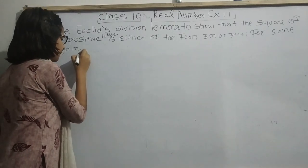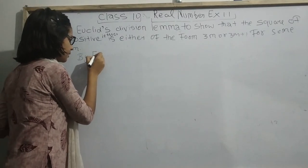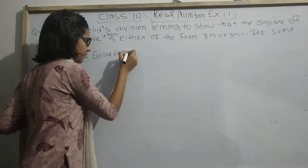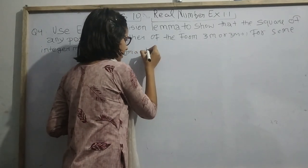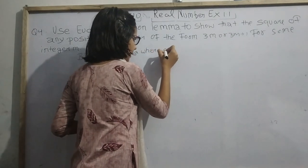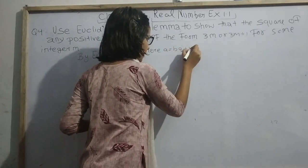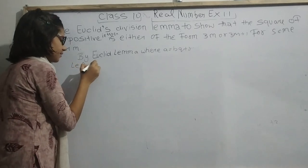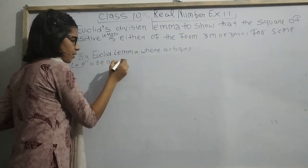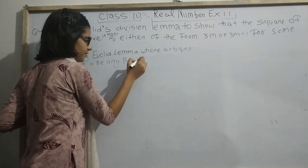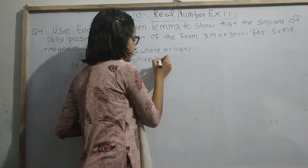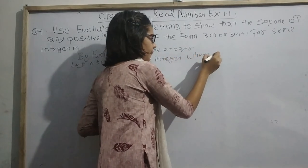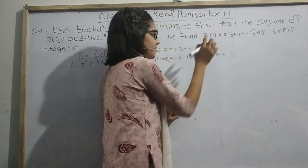By Euclid's lemma, A equals BQ plus R. Let A be any positive integer where B equals 3.